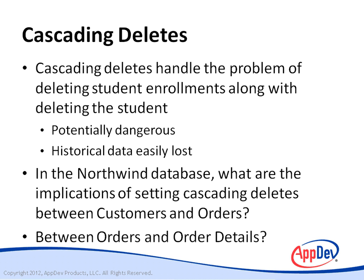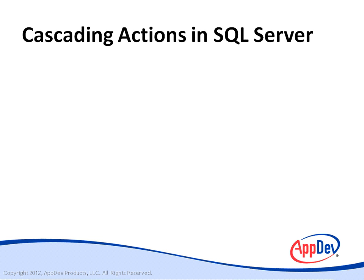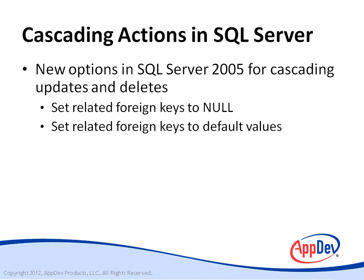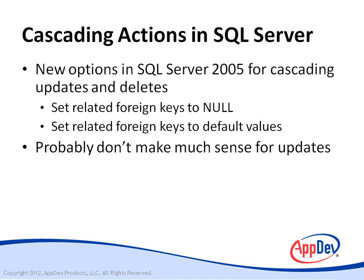So you have to carefully think through how SQL Server is going to implement cascading updates and deletes. In SQL Server 2005, Microsoft added the option to specify that updates or deletes of a primary key set related foreign keys to null or to their default values. This makes a lot of sense for deletes when the foreign key allows nulls or has a default value. When the relationship is a parent-child containment relationship, a cascading delete is often appropriate — if you delete an order, you probably want to use the cascade option to delete its order details.